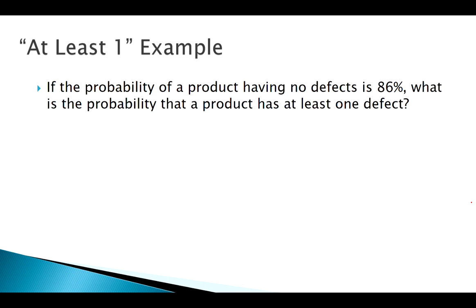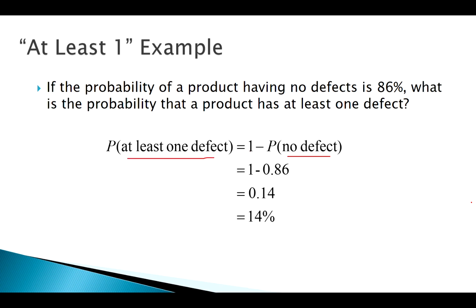Usually what we're going to be doing with the complement rule is applying it alongside other rules. One situation where it's very useful is when I'm asked something like, what's the probability of at least one thing happening? For example, if the probability of having no defects is 86%, what's the probability it has at least one defect? At least one defect means one defect, two defects, three defects, four defects, up to infinity defects. There would be an infinite amount of terms to calculate - it would be impossible to do. But with the complement rule, if I know the probability of no defects, the probability of at least one defect is one minus that. The complement rule made an impossible problem easy to solve.